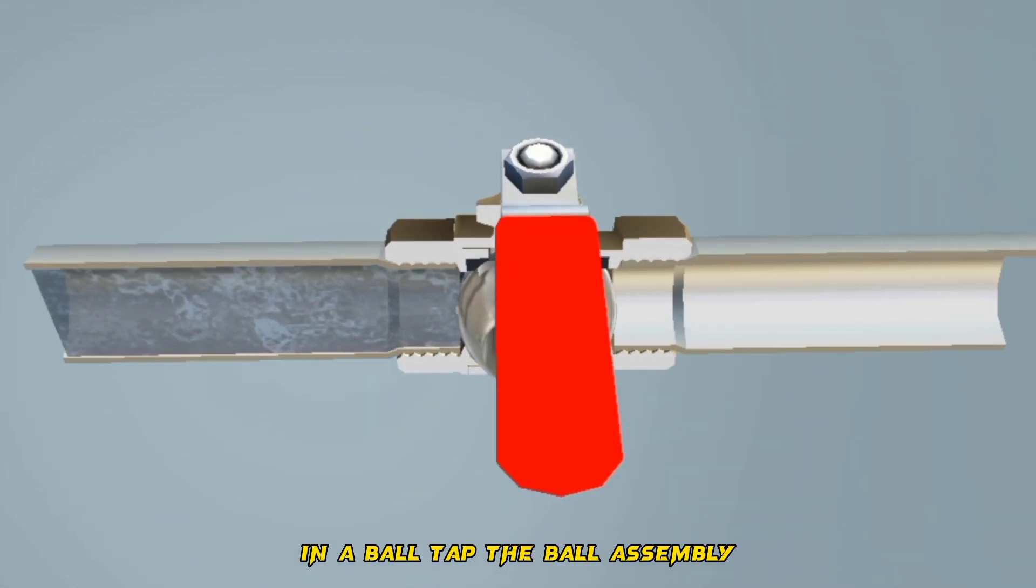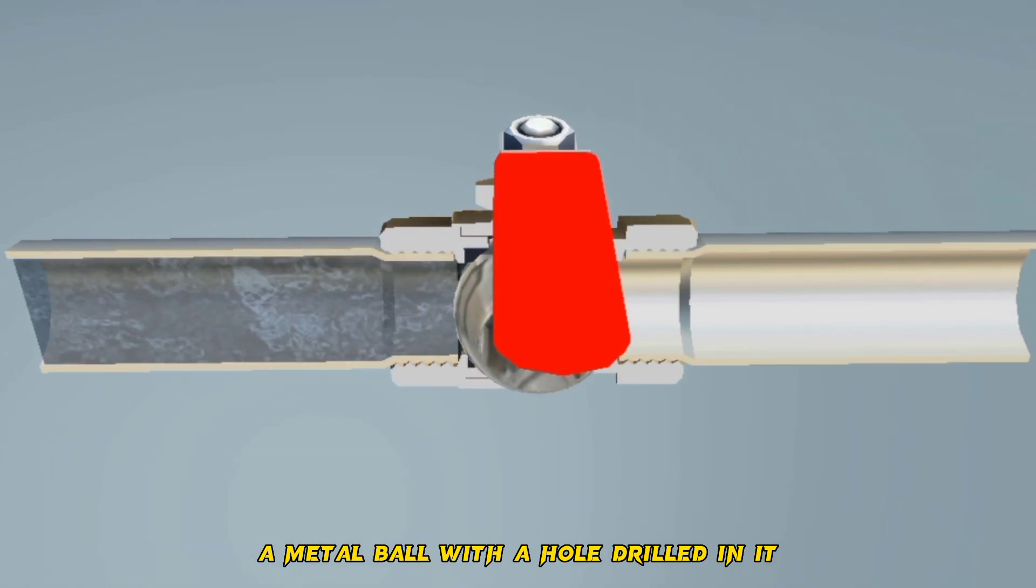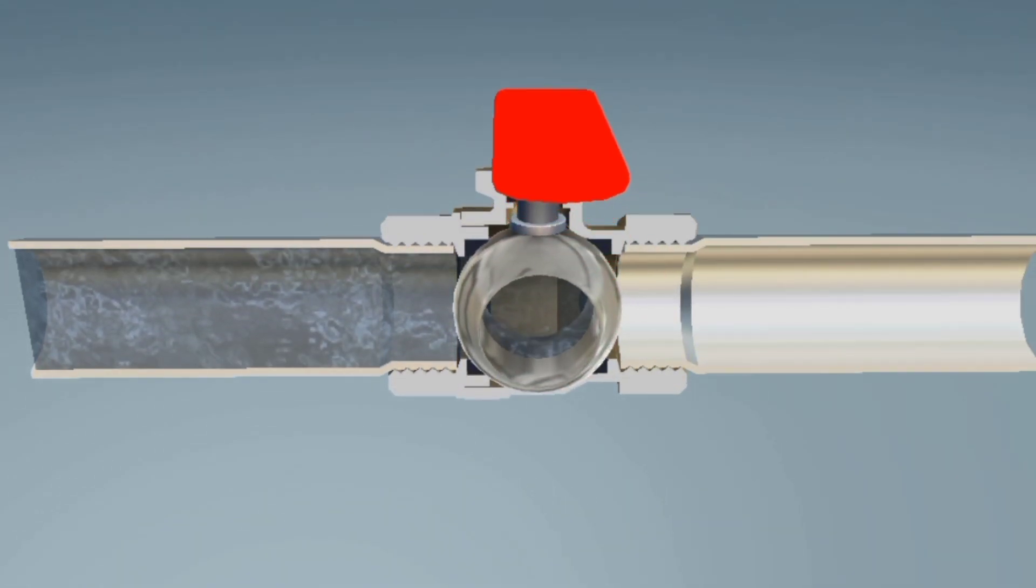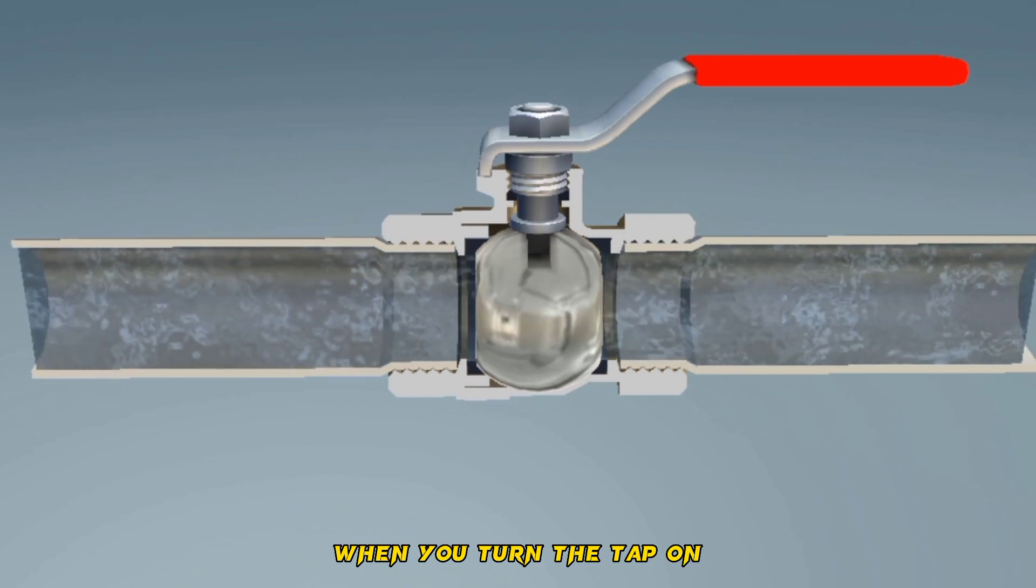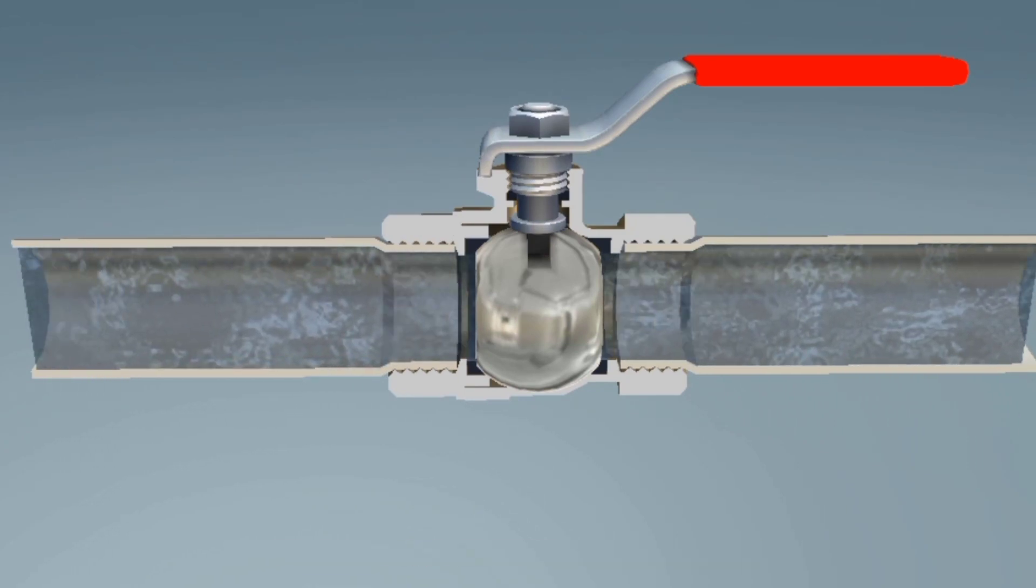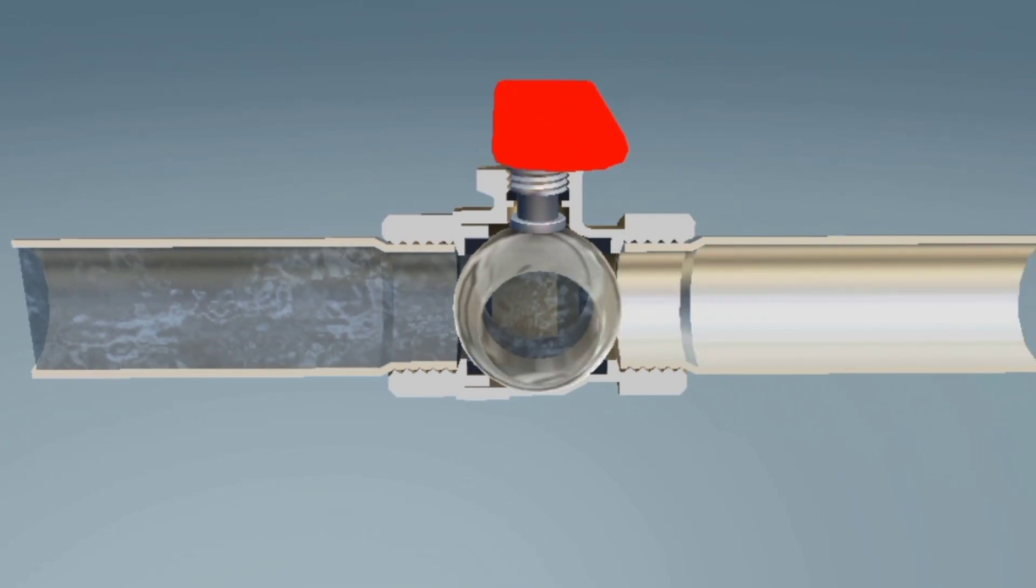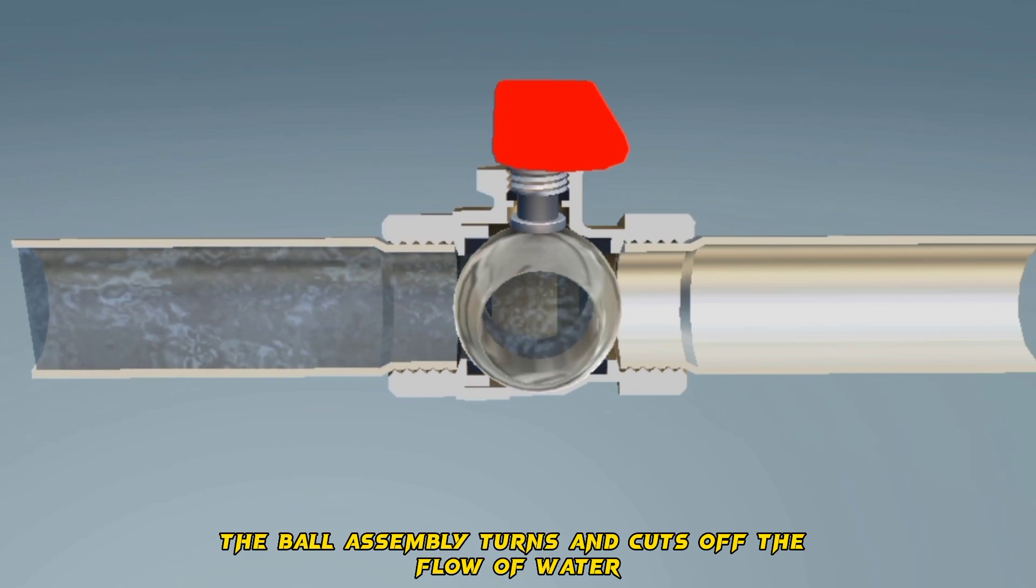In a ball tap, the ball assembly, a metal ball with a hole drilled in it, is turned by a handle. When you turn the tap on, the water flows through the hole. When you turn it off, the ball assembly turns and cuts off the flow of water.